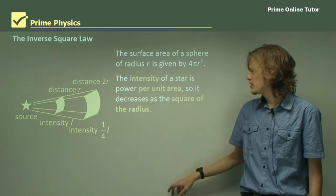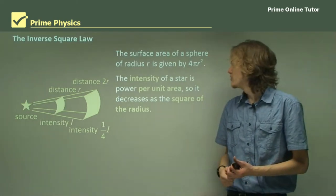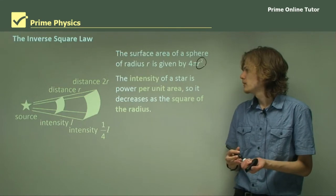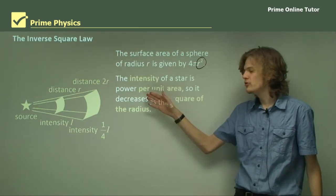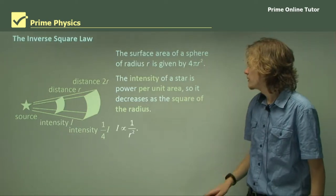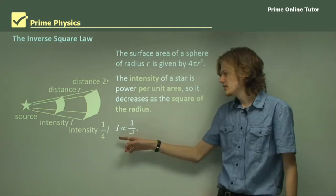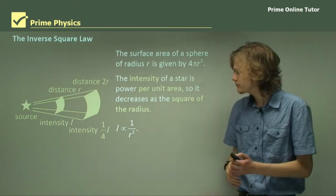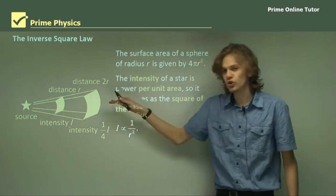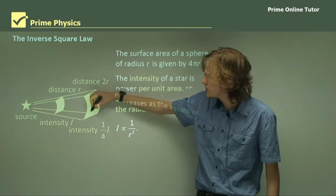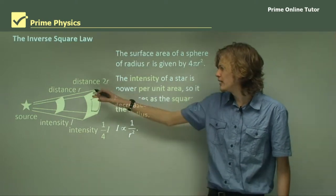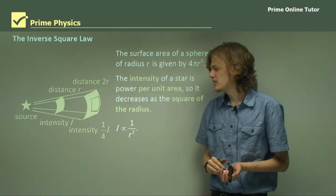The intensity of a star is power per unit area. The area increases as the square of the radius, so intensity is proportional to 1 over r². If we have distance r and intensity I, when we double that distance to 2r, we only get a quarter of the intensity, because the intensity at that point is a quarter of I.